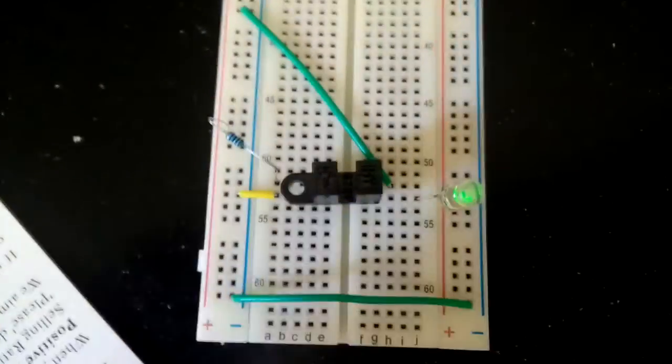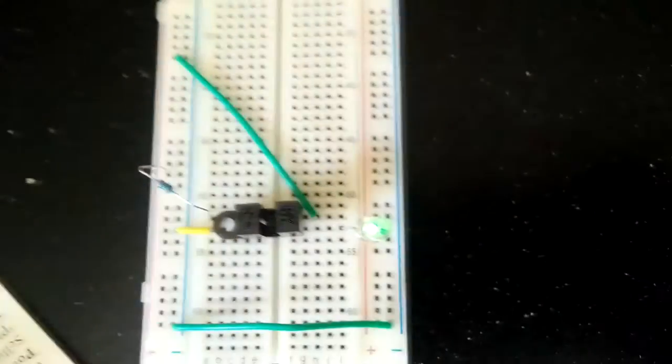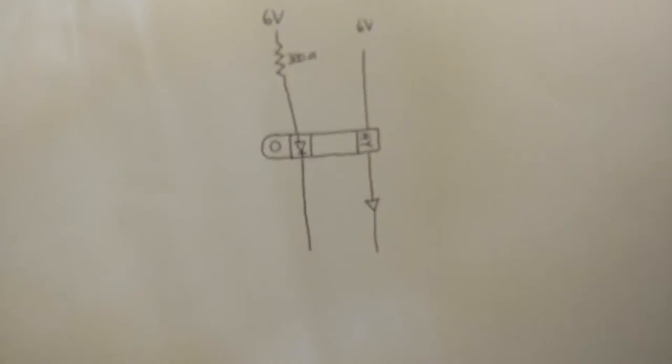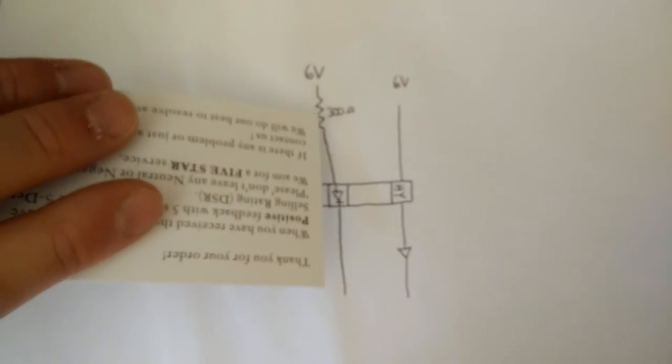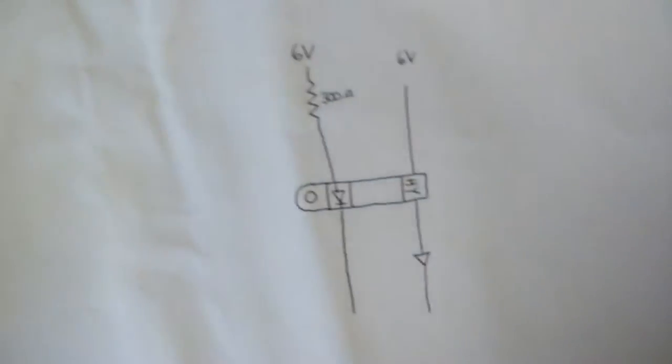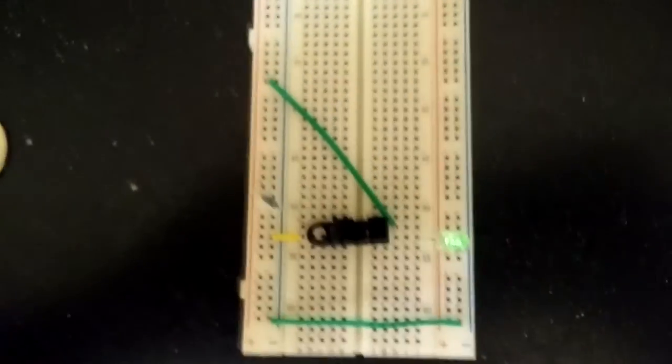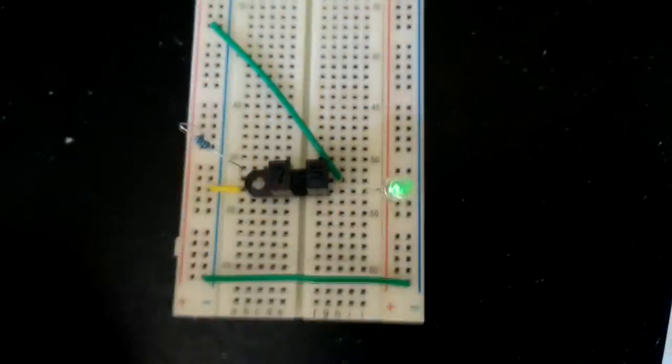So if you have a thinner material for whatever project you're doing and you still want it to turn completely off, what you're going to want to do is put more resistance. So instead of just 300 ohms, you could put something like a thousand or two thousand ohms, and then that should help. So when you put a thinner material through, it'll fully turn off.